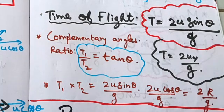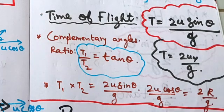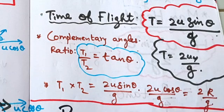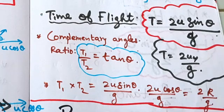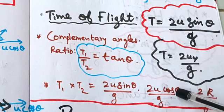Now, complementary angles: theta and 90 minus theta. For two complementary angles, the ratio of their times of flight t1 by t2 is equal to tan theta, because t1 is 2u sin theta by g and t2 is 2u cos theta by g.